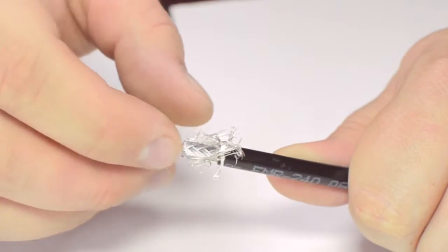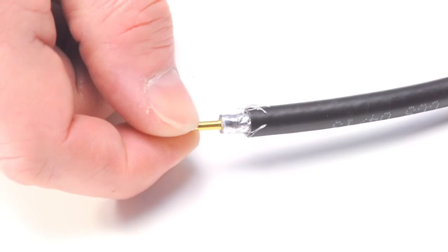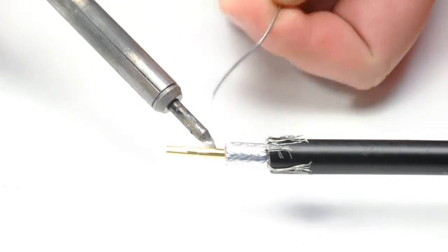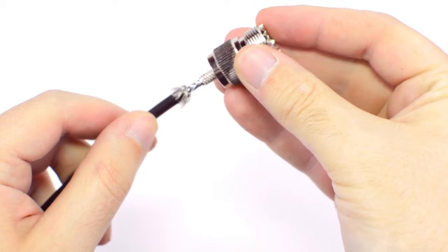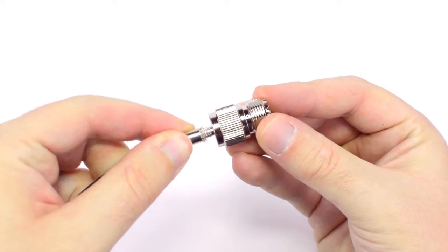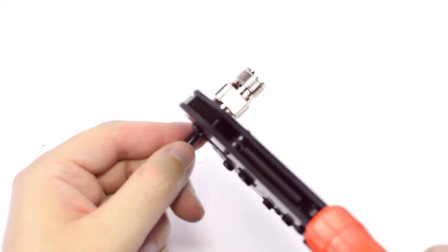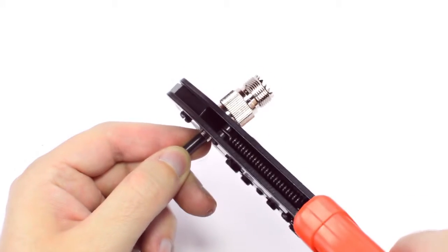Pull back the braided shield and insert the pin onto the center conductor. Solder the pin onto the center conductor and insert the connector housing over the cable. Then slide up the ferrule to the base of the connector, folding the shield with it. Crimp the ferrule under the outer jacket to complete termination.